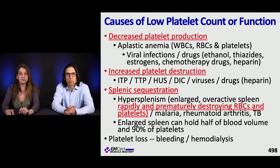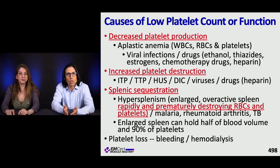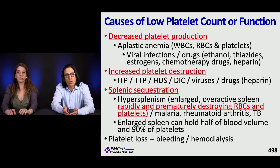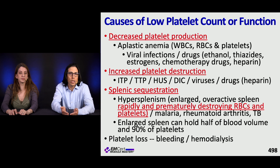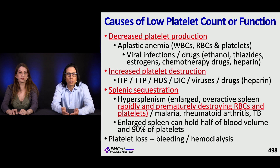Causes of thrombocytopenia or decreased platelet function fall into production, destruction, and sequestration. Decreased production includes aplastic anemia, viral infections causing bone marrow aplasia, and drugs such as ethanol, thiazides, estrogens, chemotherapy, and heparin. Platelet destruction can be caused by ITP, TTP, HUS, DIC, and HIT associated with heparin. Splenic sequestration occurs with hypersplenism, which can rapidly and prematurely destroy RBCs and platelets.